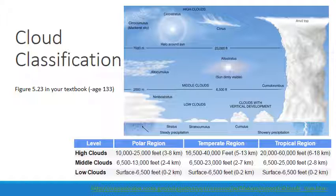The second aspect of cloud classification — height — recognizes three distinct levels of clouds: high clouds, middle clouds, and low clouds. High clouds form in the highest and coldest region of the troposphere.